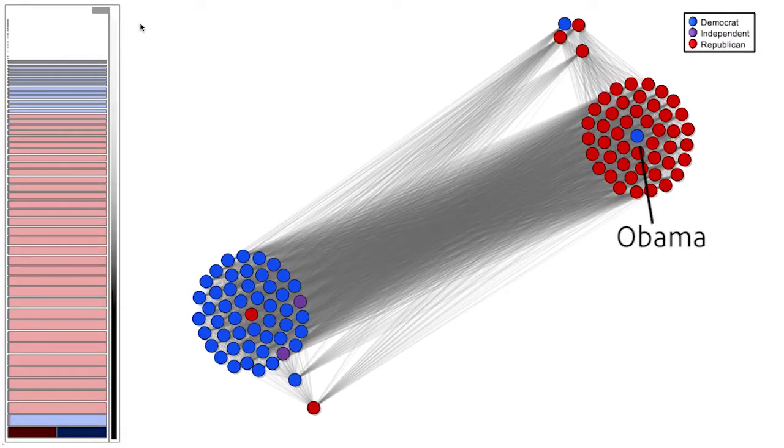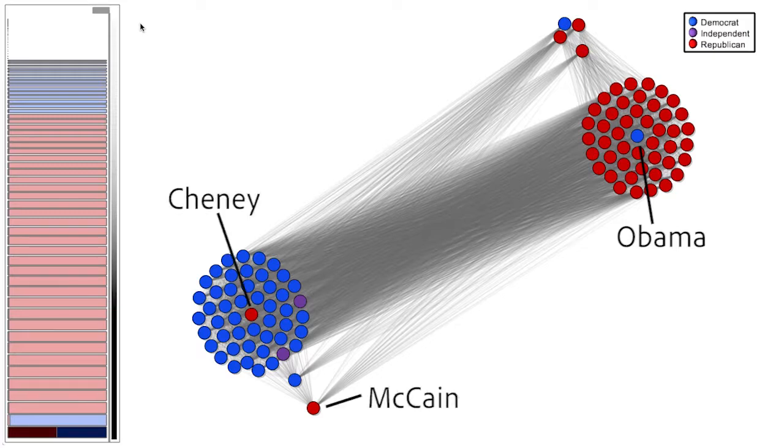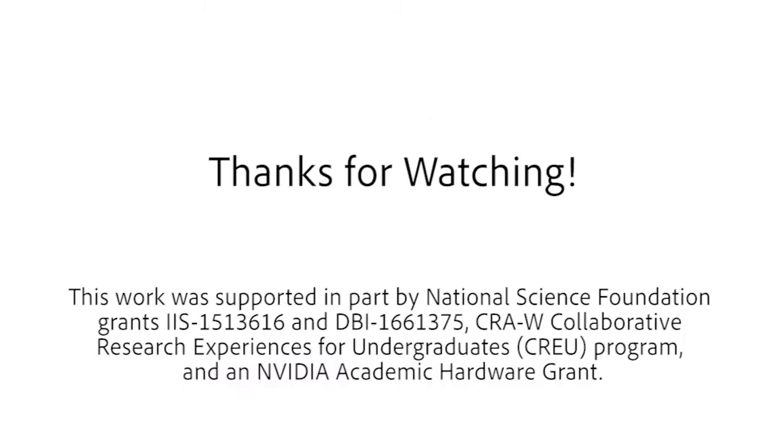On the right, we observe the Republicans, who were running against Obama in 2008. On the left, we see Democrats focused on running against McCain and Vice President Cheney. Thank you for watching.